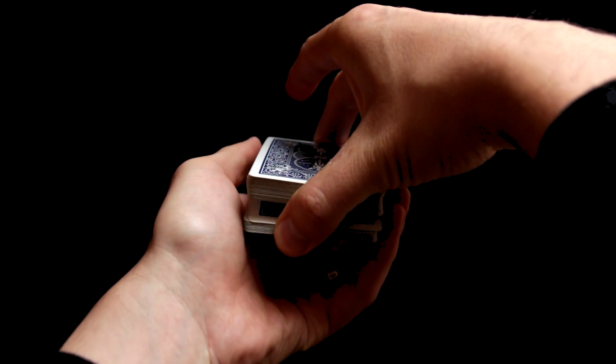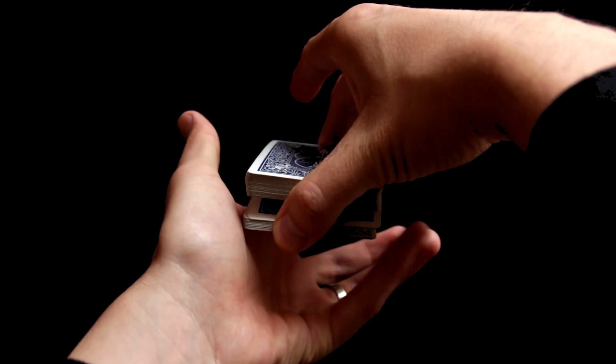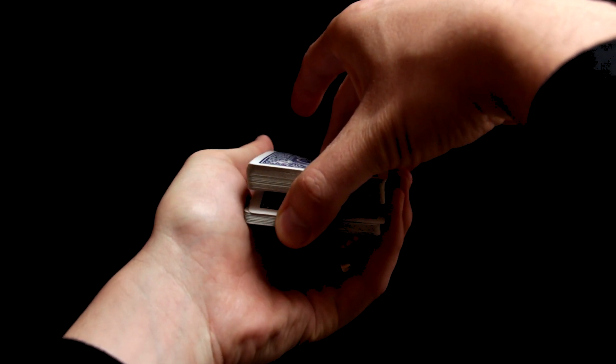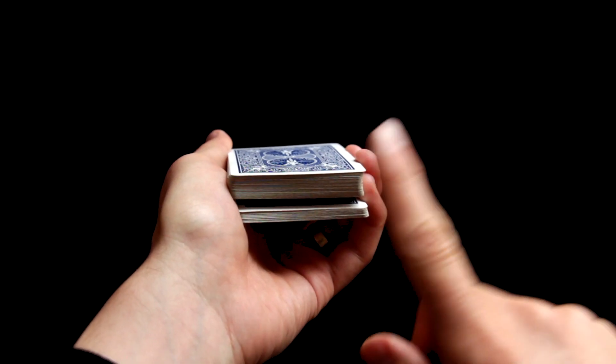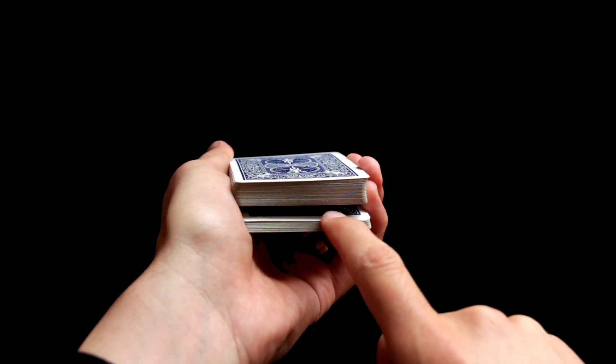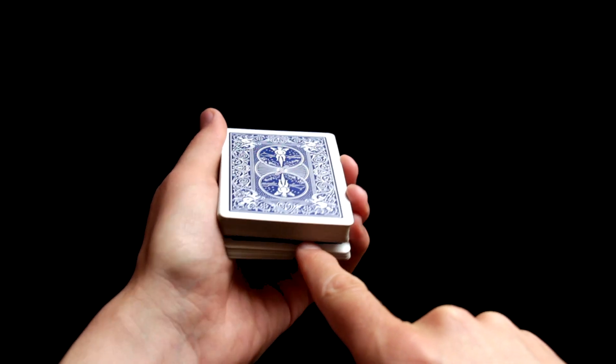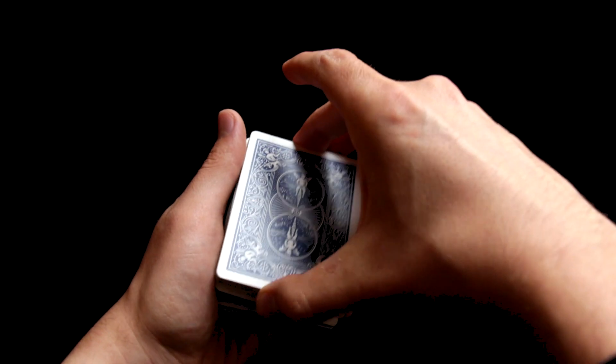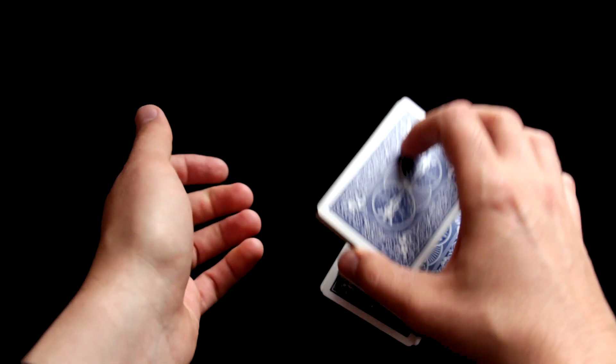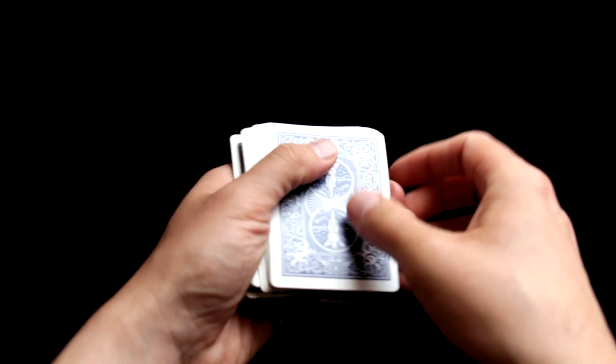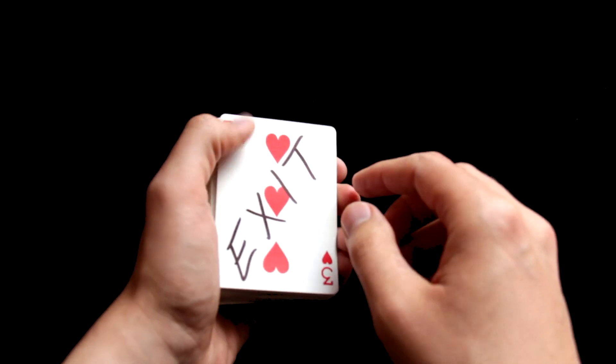Now I simply transferred this break from thumb to my pinky, so like this. So again, I have a break above the selected card. Now I simply cut the deck two times like this, and now I have my card controlled to top.